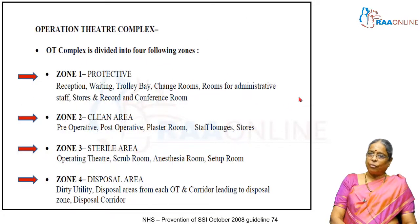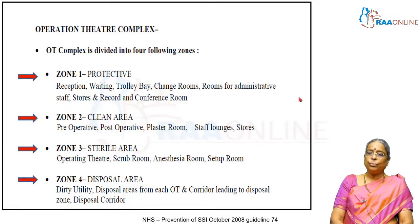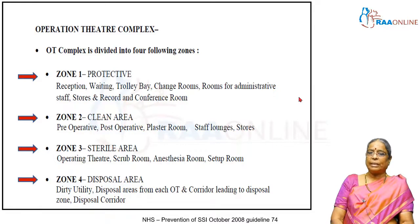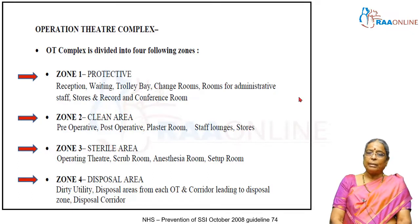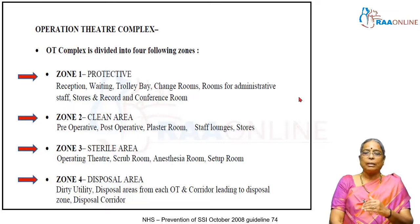Now I go on to the structure of the theater. The OT complex itself is divided into four zones — zone one, two, three, and four. Zone one is called the protective zone; it is a restricted area. You have the reception area, the waiting area where you keep the trolleys, the change rooms, rooms for administrative staff, the conference rooms, and all those things. They all come under the terminology 'protective area,' which is zone one.